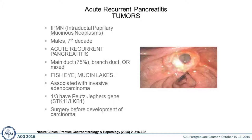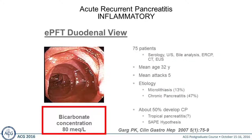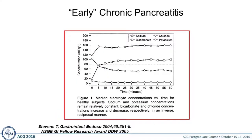The main duct IPMN is the one we're most concerned about — whether it's a fish mouth or fish eye-looking papilla. It's more mechanical, where mucin in the duct causes obstruction. Recurrent acute pancreatitis can lead to chronic pancreatitis, and once you get chronic pancreatitis you can have these acute recurrent attacks — it's a vicious circle. The endoscopic pancreas function test, giving the patient secretin and aspirating pancreas juice to measure bicarbonate, helps determine whether a person has early chronic pancreatitis.